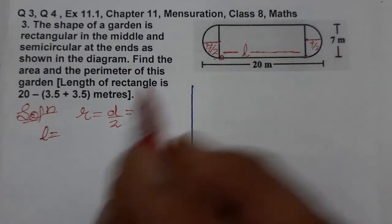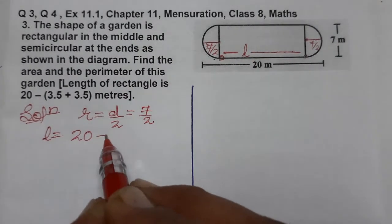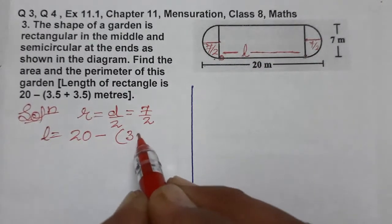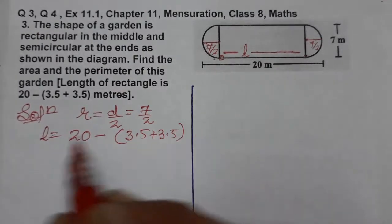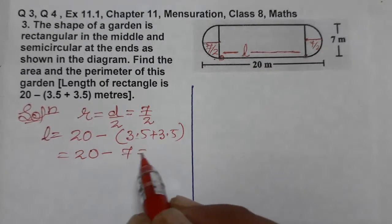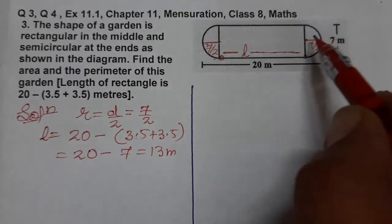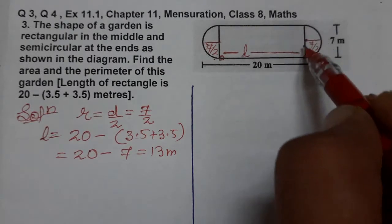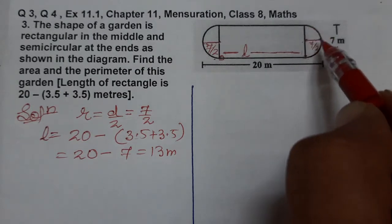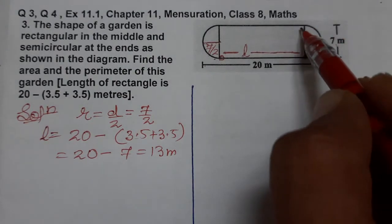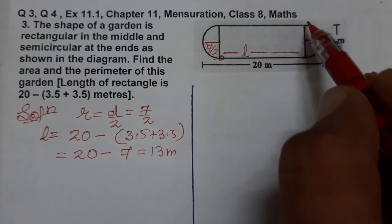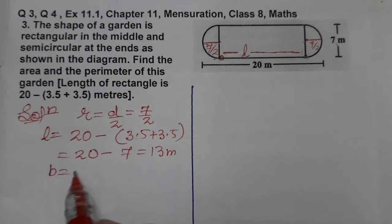Length equals 20 minus the sum of both radii. 7/2 is 3.5, and 3.5 plus 3.5 is 7. So length equals 20 minus 7, which gives us 13 meters. The breadth is given as 7, which is also the diameter. So breadth is 7 meters.